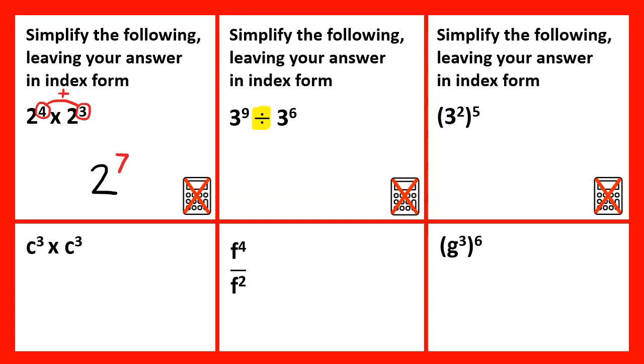When dividing terms where the base numbers are the same, we can subtract the indices. So the base number will remain as 3, and 9 subtract 6 is 3, so 3 to the power of 3.